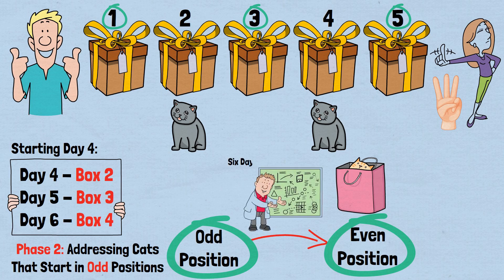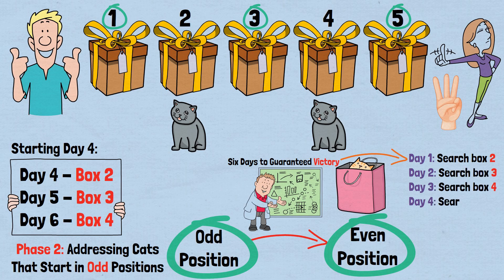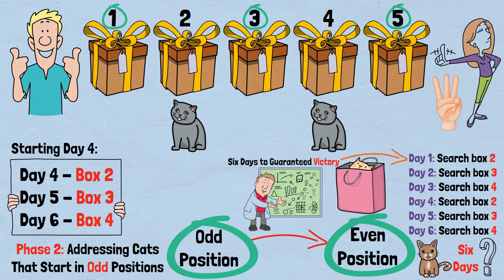The complete strategy: 6 days to guaranteed victory. Our complete winning strategy is Day 1: Search box 2. Day 2: Search box 3. Day 3: Search box 4. Day 4: Search box 2. Day 5: Search box 3. Day 6: Search box 4. This strategy is mathematically guaranteed to find the cat within 6 days, regardless of where it started.